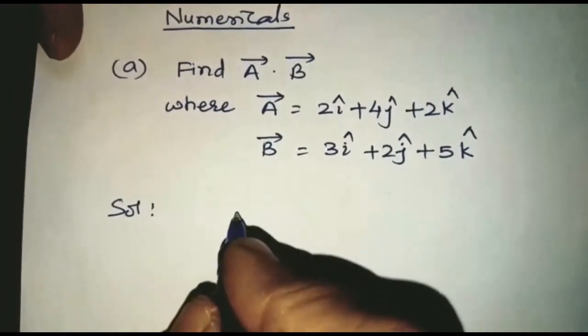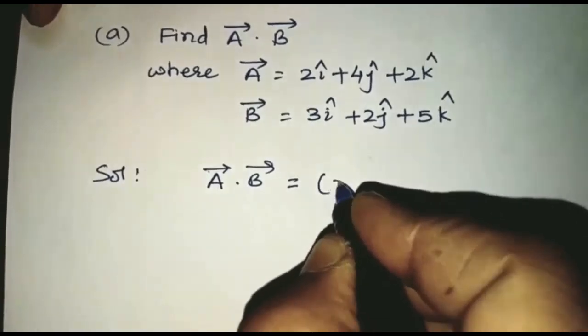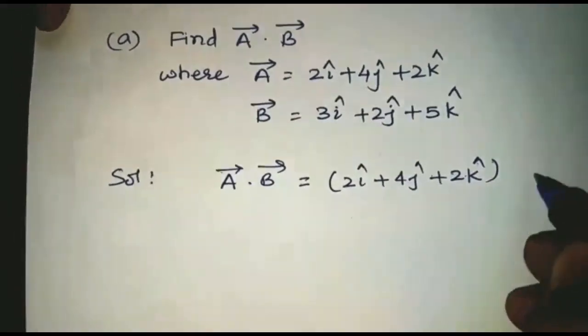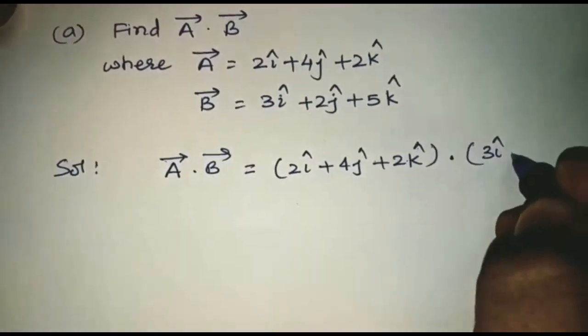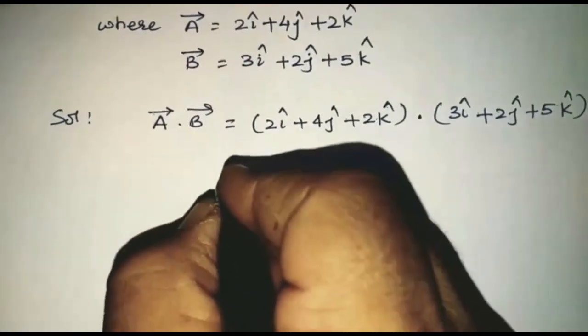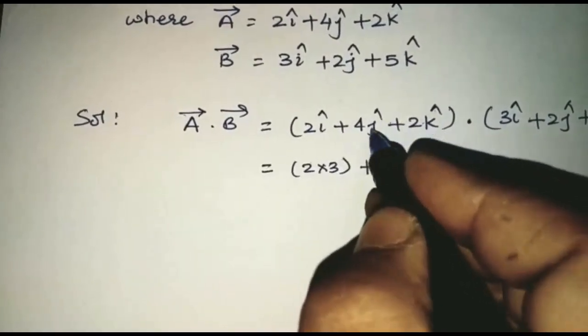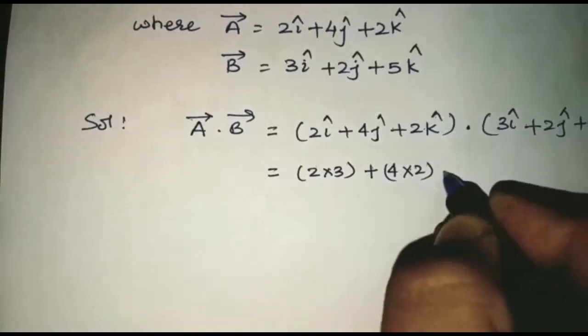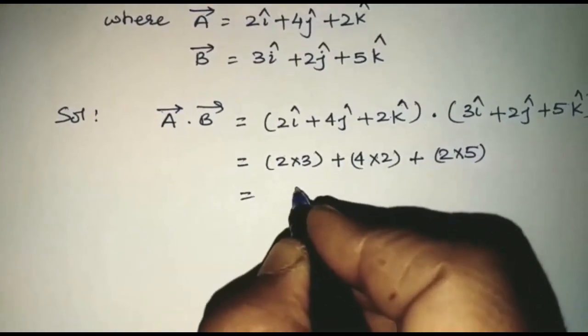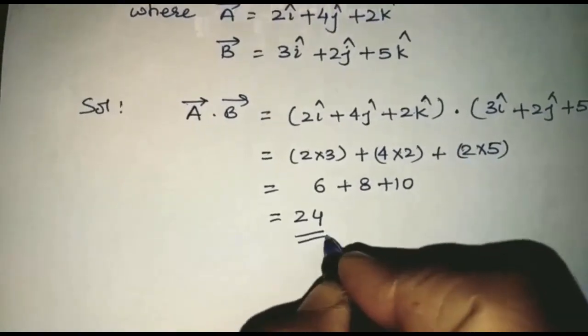The solution is A dot B equals 2i, 4j, 2k dot 3i plus 2j plus 5k. Now multiply the coefficient of i, that is 2 into 3. Then multiply the coefficient of j, 4 into 2. Now multiply the coefficient of k, 2 into 5, which equals 6 plus 8 plus 10, that is 24. 24 is the answer.